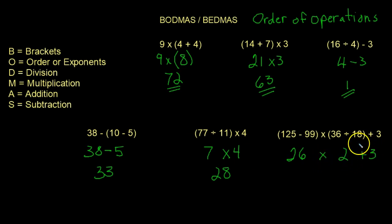So this part here has to come last, because there's no subtraction. So 26 multiplied by 2 is going to give us 52, plus 3 gives us 55. All right, I hope this has been helpful.